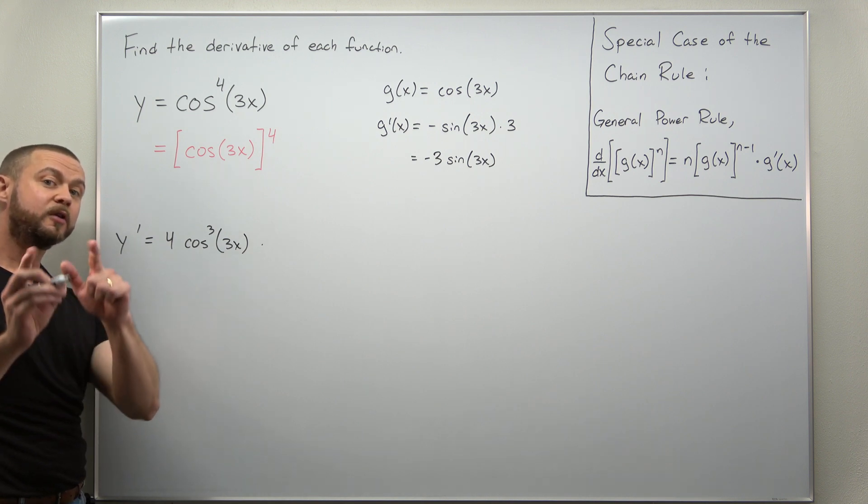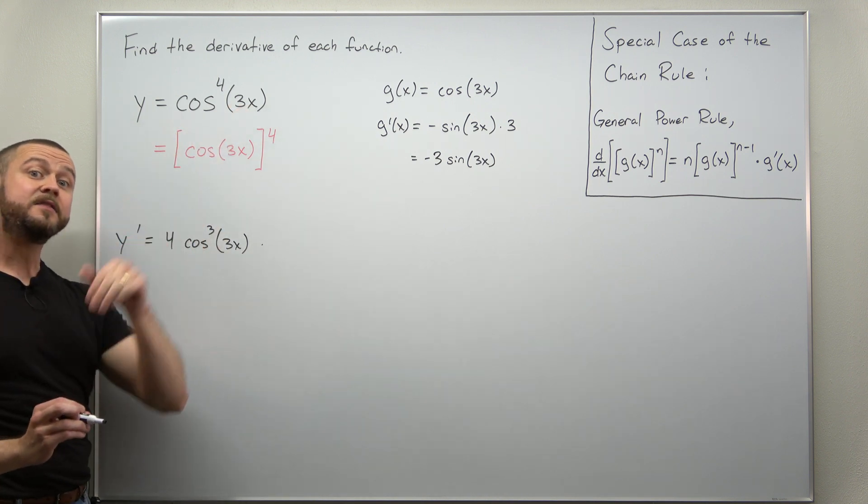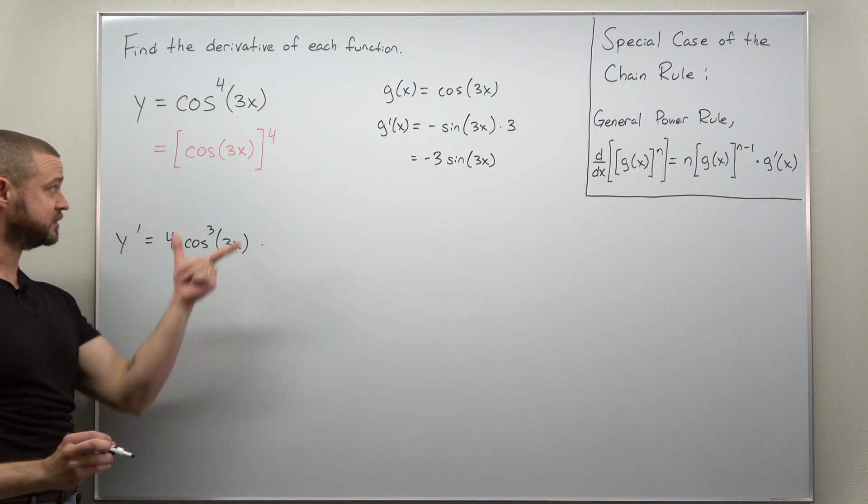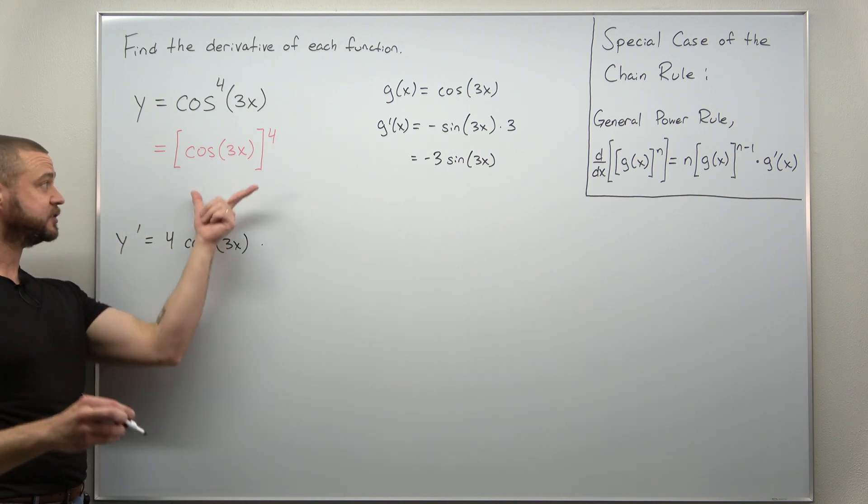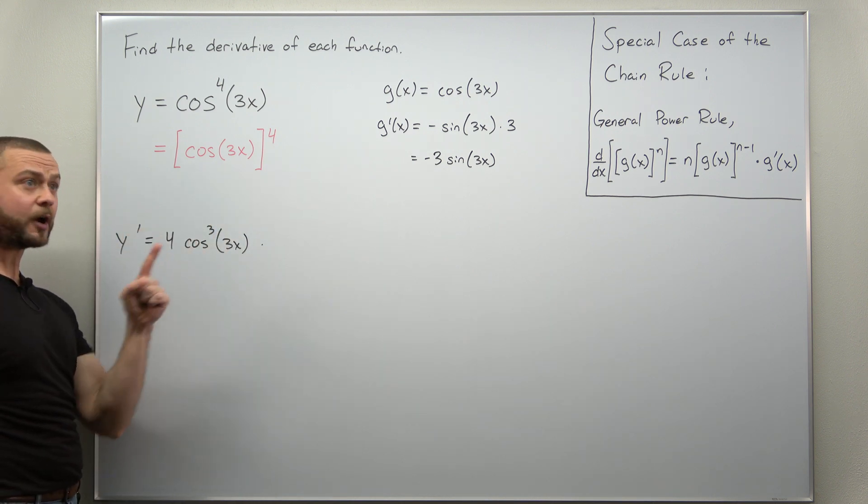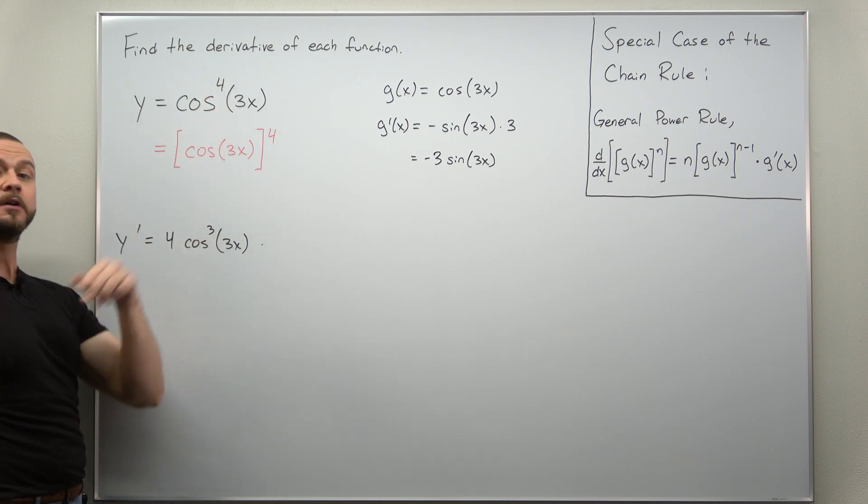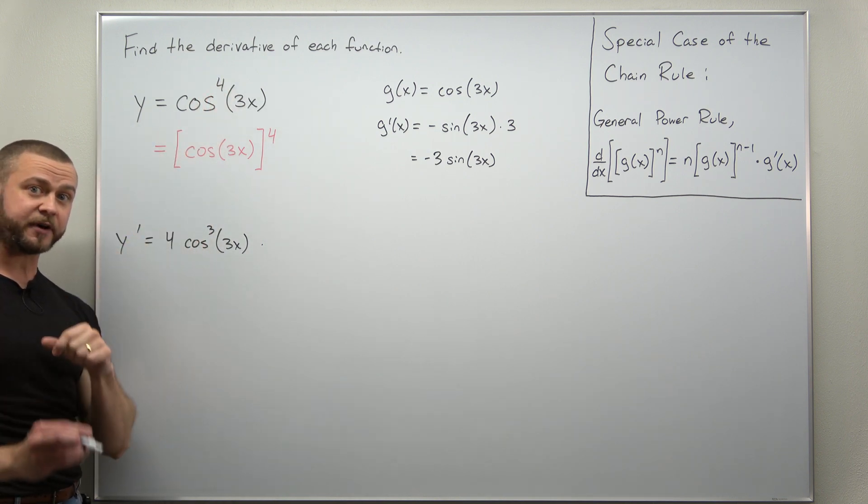Notice we subtract 1 from that power. You want to be comfortable trying to keep your notation written here in the power notation for trig functions without having to rewrite this all the time. So we start by bringing the power 4 down, subtract 1, so we get now cosine cubed of 3x.